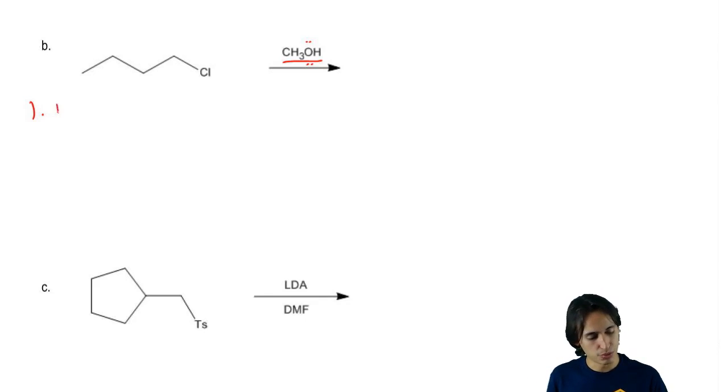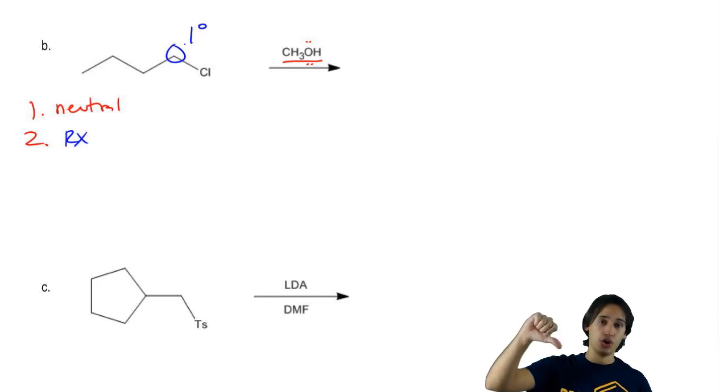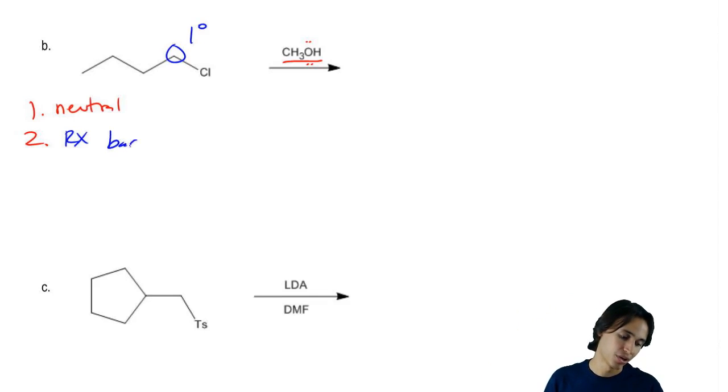So here I'm going to just put neutral. So my second question was what type of alkyl halide or leaving group do I have? What do you guys think? This is actually primary. Is that going to make a good carbocation? No.